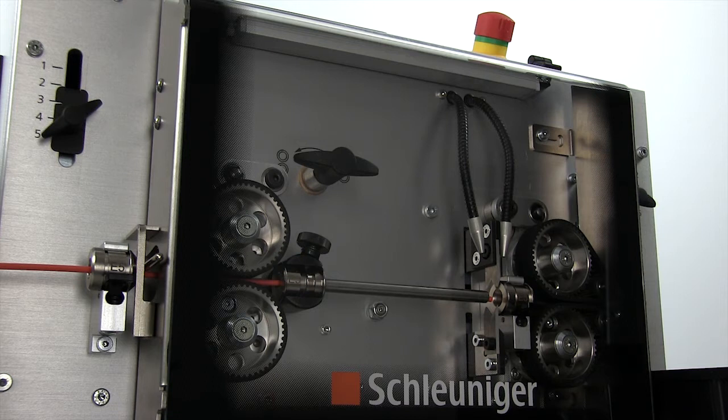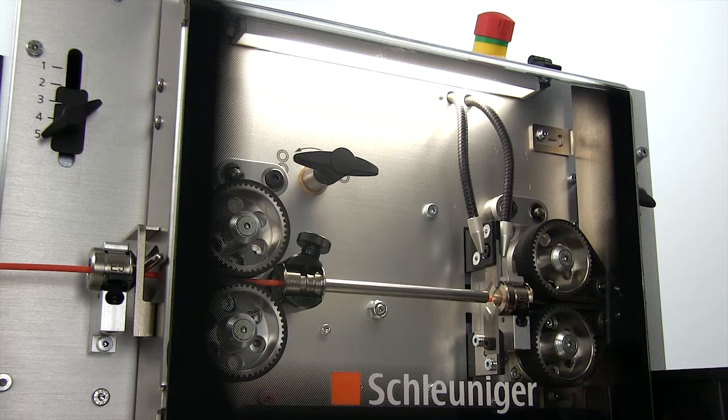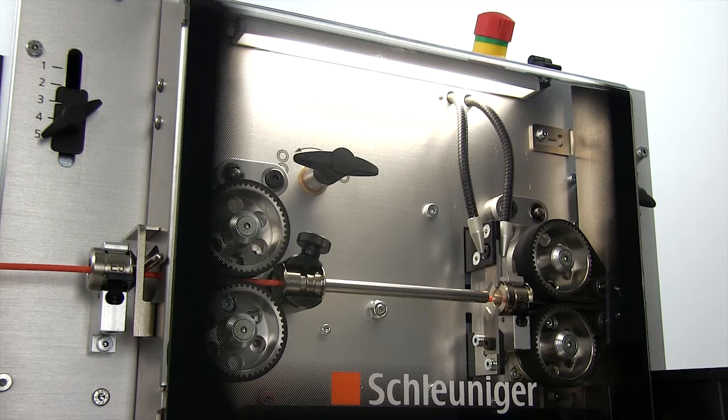Available optional accessories include LED lighting, Air-Jet unit for blade cleaning, convenient tool storage tray, and a variety of wire straighteners.